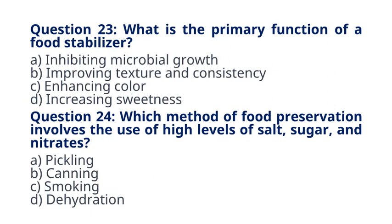Question 24. Which method of food preservation involves the use of high levels of salt, sugar, and nitrates? A. Pickling. B. Canning. C. Smoking. D. Dehydration. The correct answer to question 24 is option C. Smoking. Explanation. Smoking is a preservation method that involves exposing food to smoke, often in combination with salt, sugar, and nitrates, to inhibit microbial growth and add flavor.